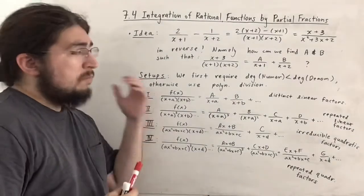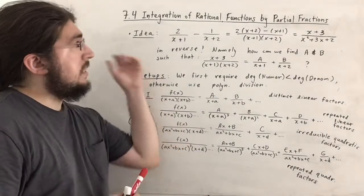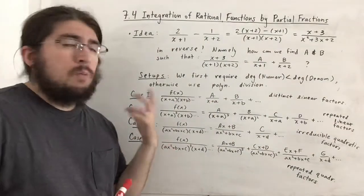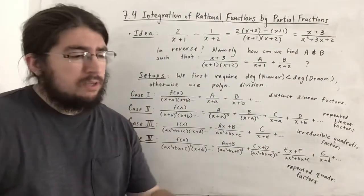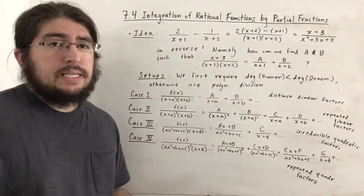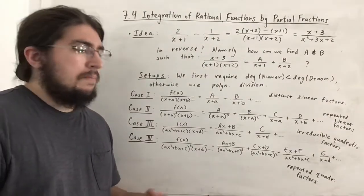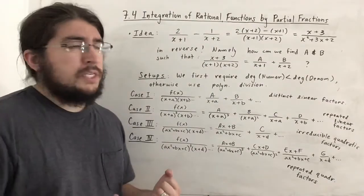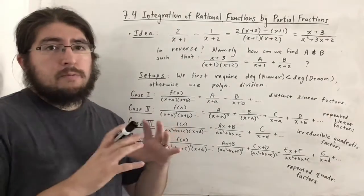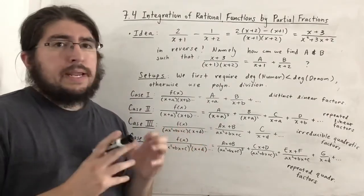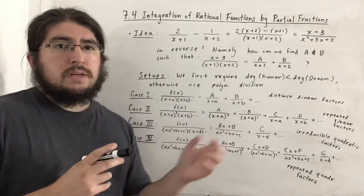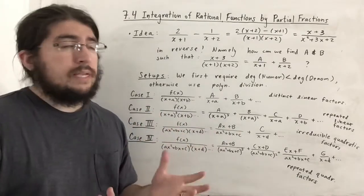Hello everyone, here we'll be talking about section 7.4, which covers integration of rational functions by partial fractions. We'll first start by talking about what partial fractions actually is — otherwise known as partial fraction decomposition. Basically, it's the process of taking any rational function and breaking it up into a sum of other rational functions whose denominators have smaller degrees.